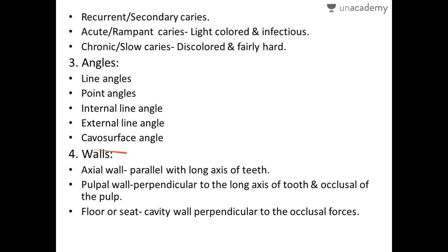The cavosurface angle is the angle or junction of the cavity wall preparation and the sound tooth structure. It is the junction where the cavity wall meets the unprepared sound tooth structure — one side is the sound structure and the other side is the prepared cavity. Wherever these two walls meet is known as the cavosurface angle.